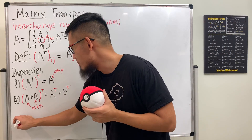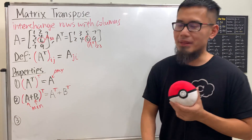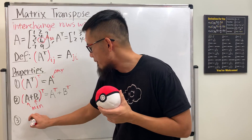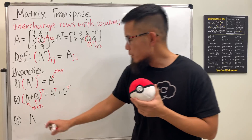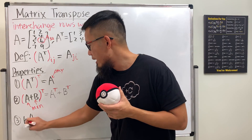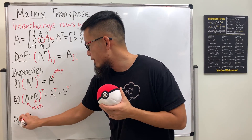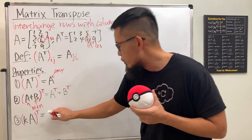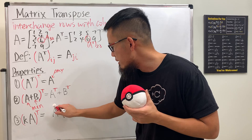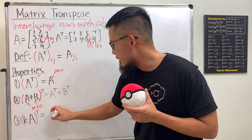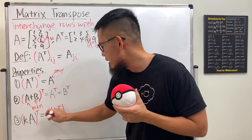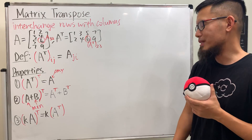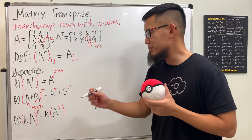Property three: if you have A and before you do the transpose you multiply by some constant K, and then do the transpose, it's actually the same as doing the transpose first and then multiplying the result by K. That's also pretty obvious, but just keep that in mind. This works for any matrix.